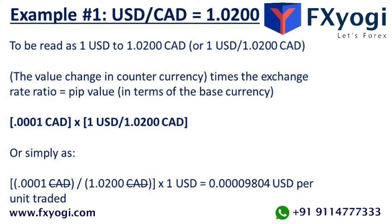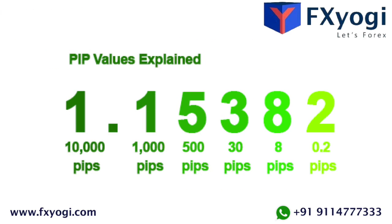Using this example, if we traded 10,000 units of the USD/CAD currency pair, then one pip change in the exchange rate would be approximately 0.98 USD change in the position value — that is 10,000 units times 0.00000980 USD per unit. Hope you understood what a pip is. In our next video, let's get into more details. Until then, take care, bye.